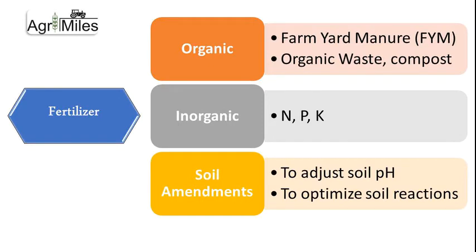Fertilizers are another agricultural input, available in the form of organic fertilizers, inorganic fertilizers, and many other soil amendments. Organic fertilizers include farm yard manure, organic waste, and compost, whereas inorganic fertilizers are nitrogen, phosphorus, and potassium in various combinations and industrially prepared formulations. Various soil amendments are used to adjust soil pH and to optimize soil reactions.